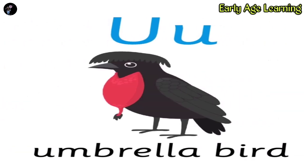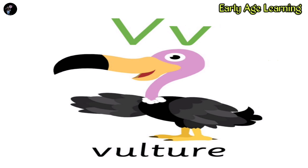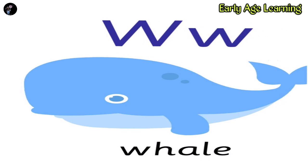U. U for Umbrella Bird. U-M-B-R-E-L-L-A-B-I-R-D. Umbrella Bird. V. V for vulture. B-U-L-T-U-R-E. Vulture. W. W for whale. W-H-A-L-E. Whale.